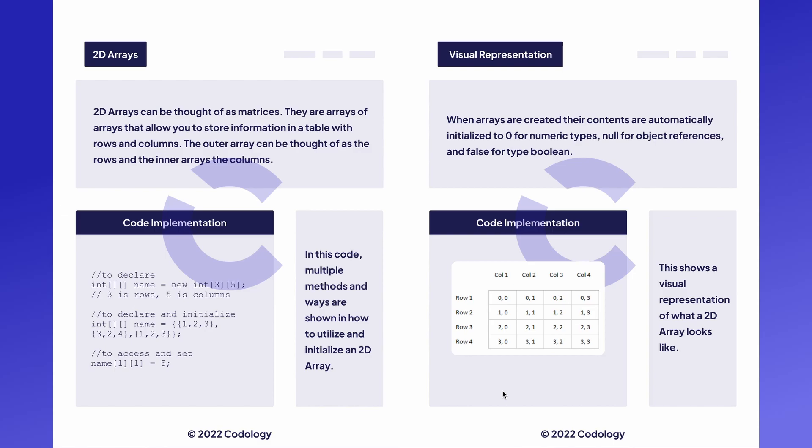To access and set all of the different elements in your 2D array, similar to a regular 1D array, you call the name followed by two square brackets each with the index you want to access, and then you would set it equal to 5 in this case. Let's look at a visual representation.